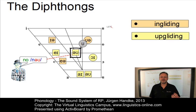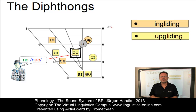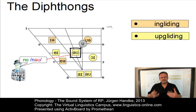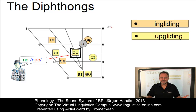The diphthong as in 'no' has a first element in RP that is clearly a schwa. Many non-native speakers of RP produce it too far back towards O — so instead of saying 'no,' they often say 'no' with a more backed first element.